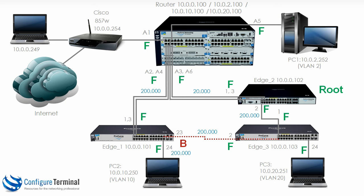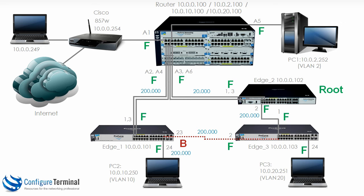Spanning tree chooses the root of the spanning tree topology, which is edge 2. It then chooses the root ports of the switches: edge 3 port 1, router TRK 2, edge 1 TRK 1. It then chooses designated ports. The designated port on the link between edge 2 and edge 3 is port 2 on edge 2. Between the router and edge 2 would be ports 1 and 3, in other words TRK 1 on edge 2.